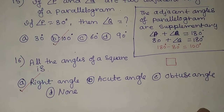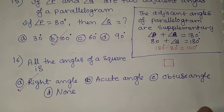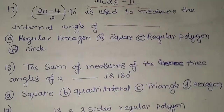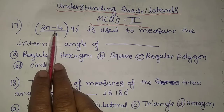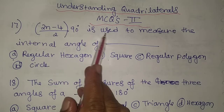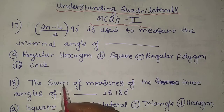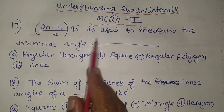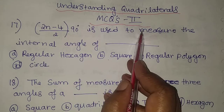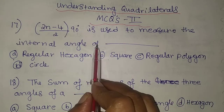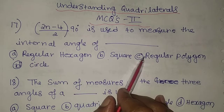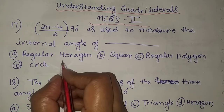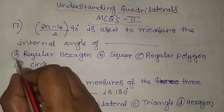We completed problems 13 through 16. Moving on to the 17th problem: the formula (2n − 4)/n × 90 degrees is used to measure the internal angle of what? The four options are regular hexagon, square, regular polygon, and circle. This formula is used to find the interior angle of a regular polygon.